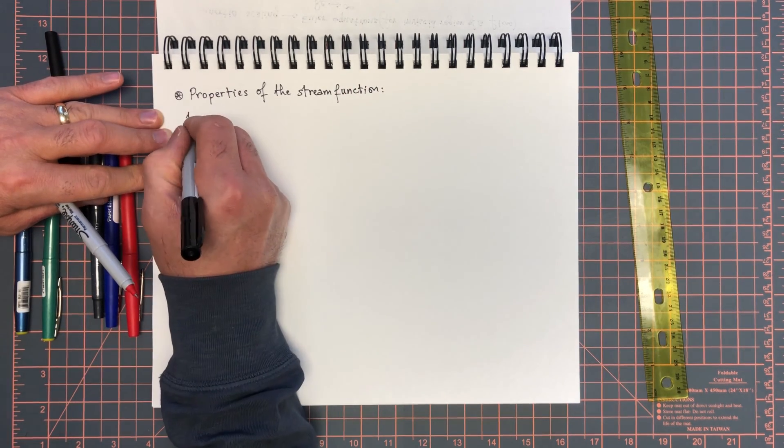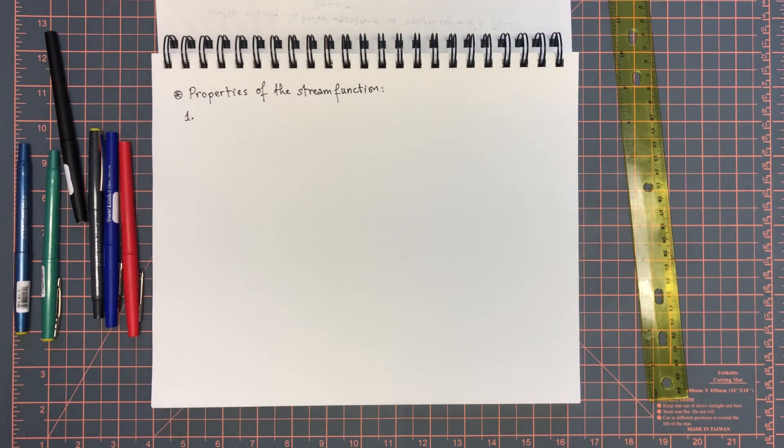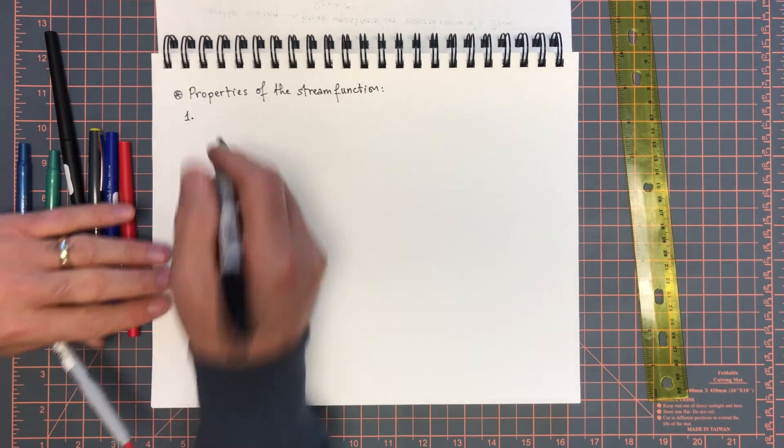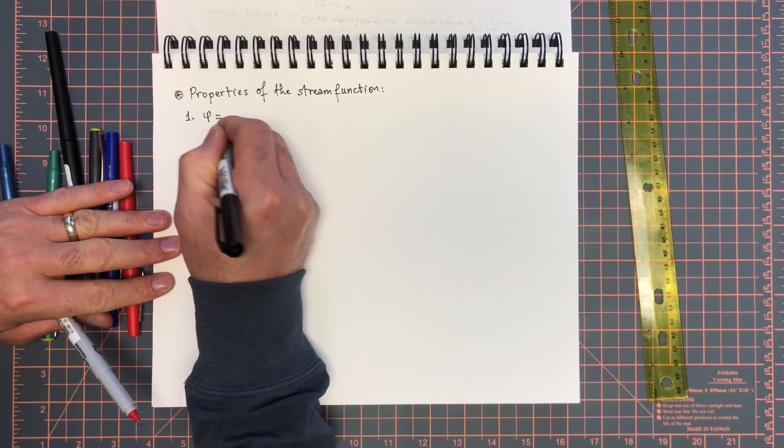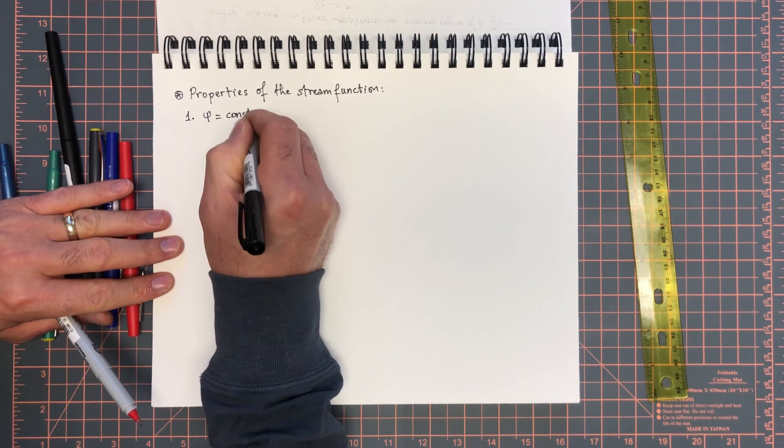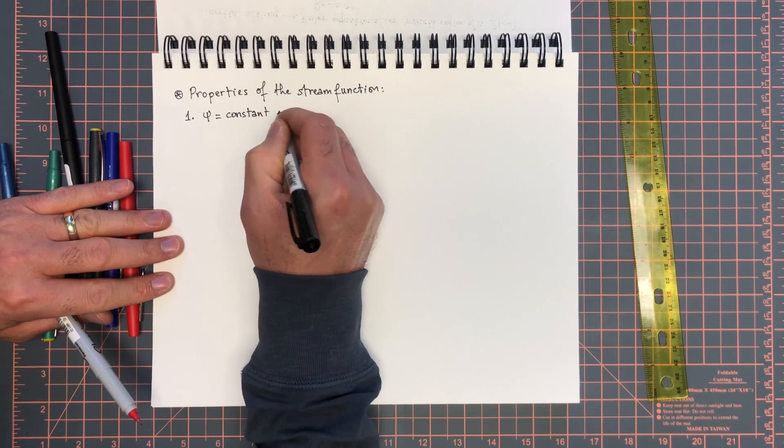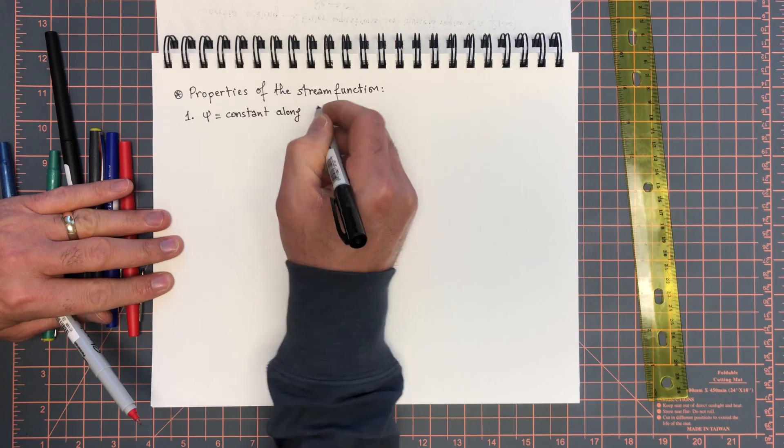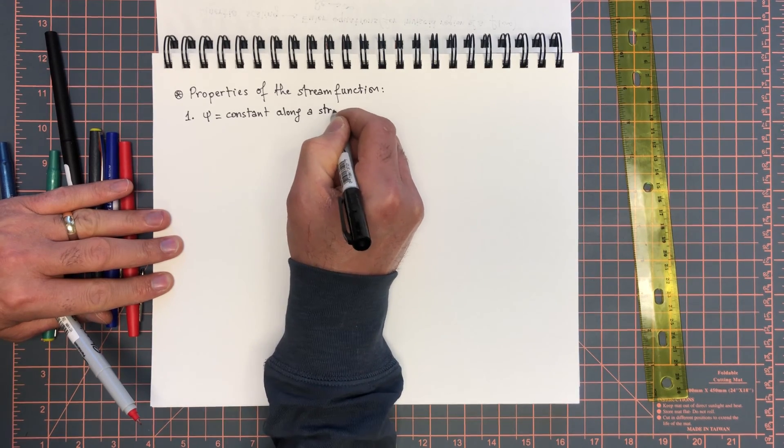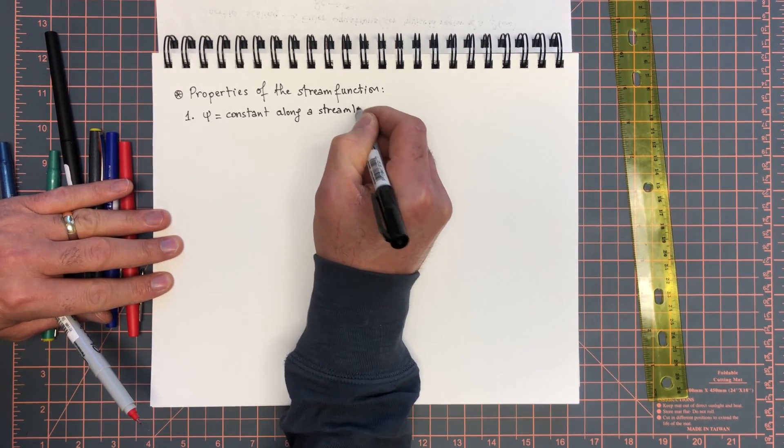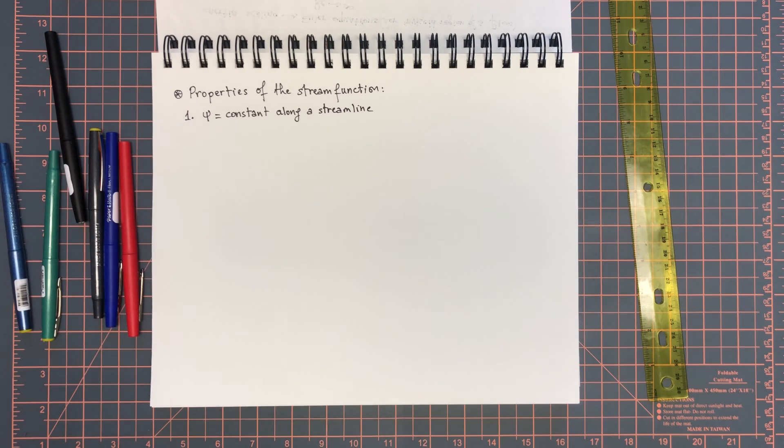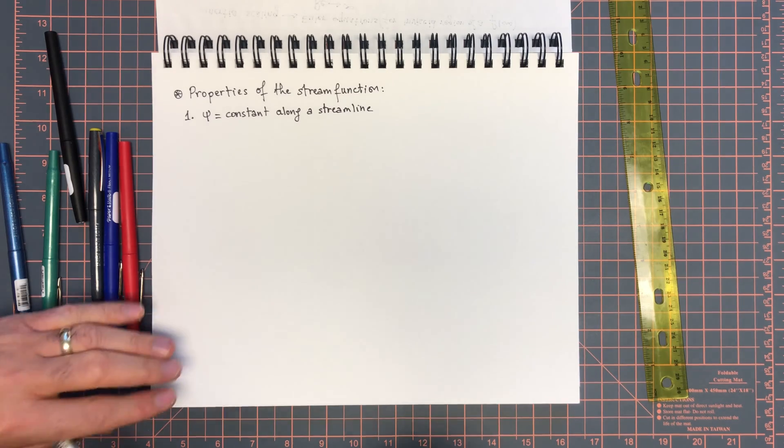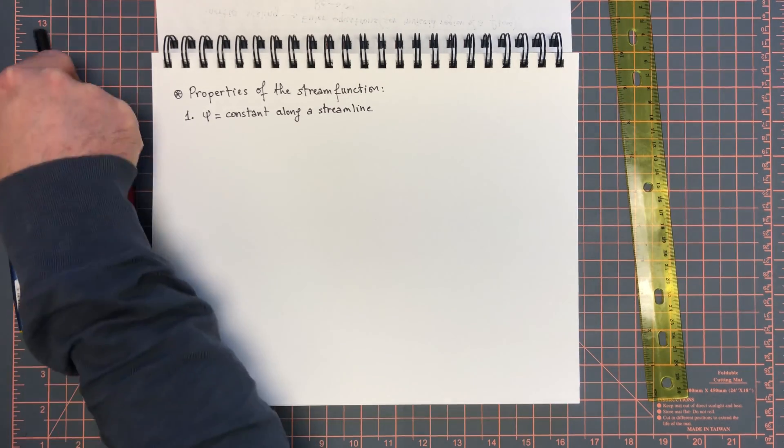The first property of the stream function is that ψ equals constant along a streamline. That's why we really call it a stream function - because it is tightly related to the streamline. It just assigns a value to the streamline.